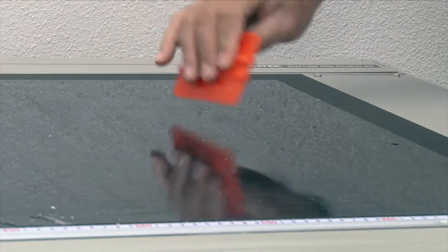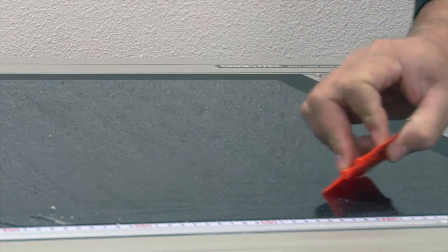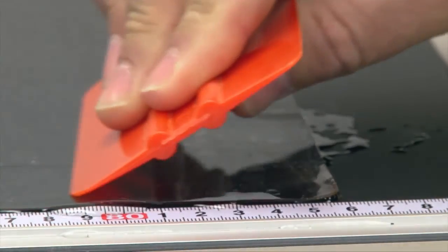Smooth the mat down by using the squeegee. Start from the middle of the mat and work towards the outside. Keep in mind that the goal is to remove as much of the water bubbles from underneath the mat as possible.